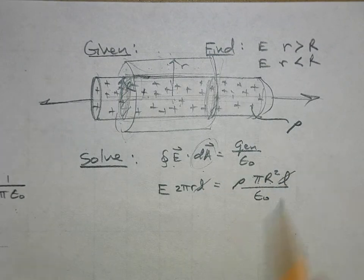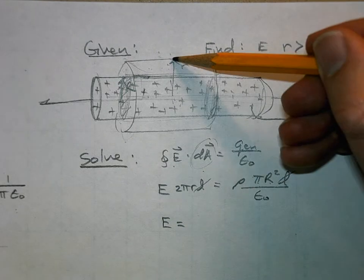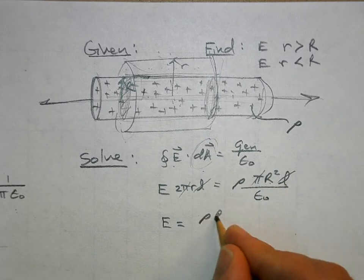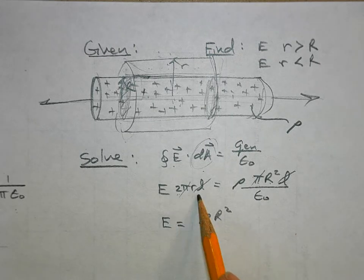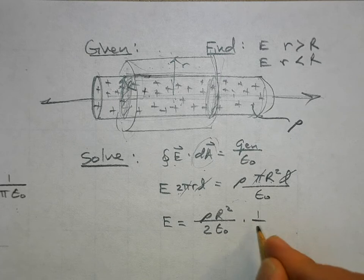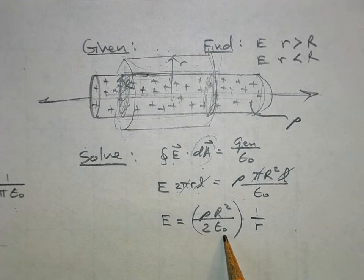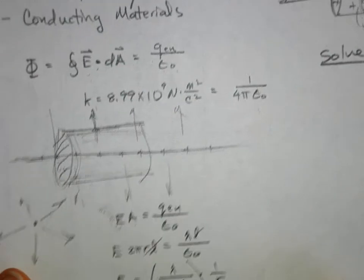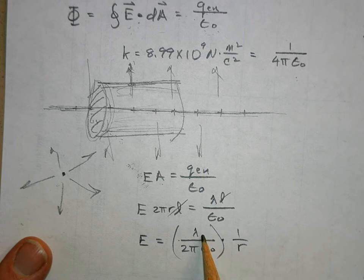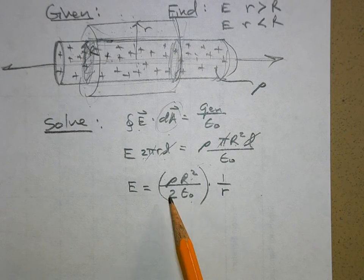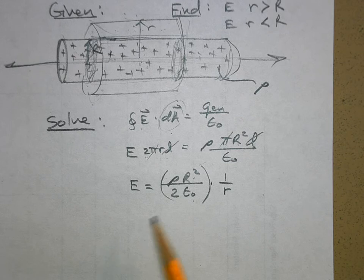The length cancels, and the pi cancels as well. So for r > R: E equals ρR²/(2ε₀) times 1/r. This is a constant times 1/r, just like the line charge result. The difference is that here we have volume charge density, so we multiply by R squared, but it's still an inverse-r dependence outside the cylinder.